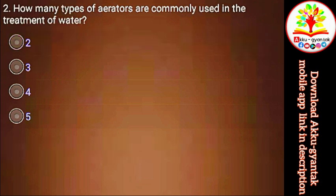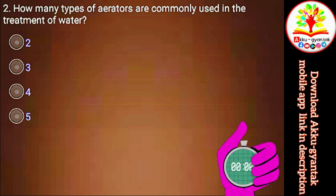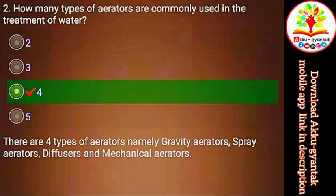How many types of aerators are commonly used in the treatment of water? a) 2, b) 3, c) 4, d) 5. Right.